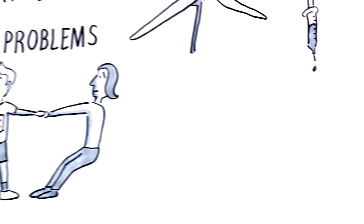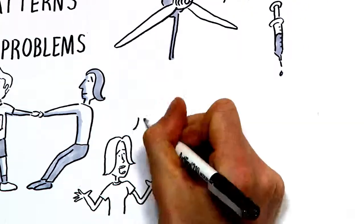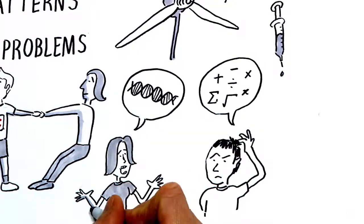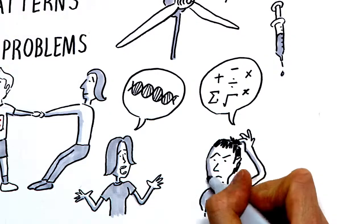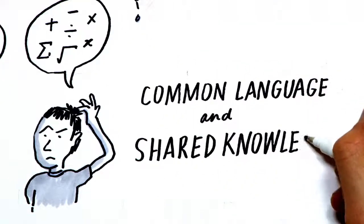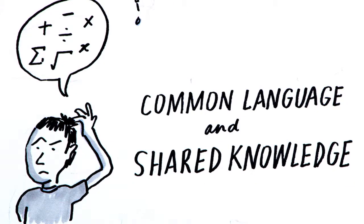There's another problem too: a skill shortage within the maths community. There just aren't enough mathematicians who can communicate well with biologists, ecologists, economists and engineers. Having a common language and shared knowledge is critical for collaborative problem solving.